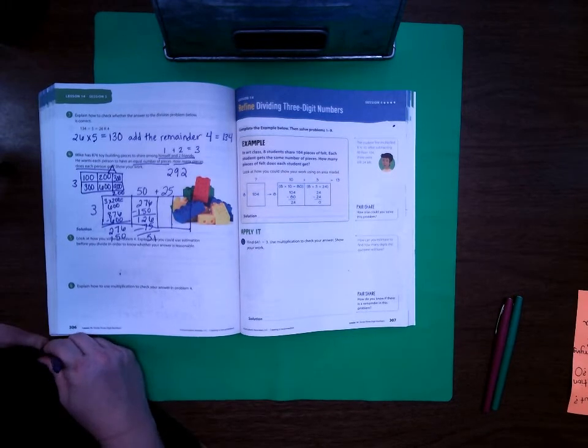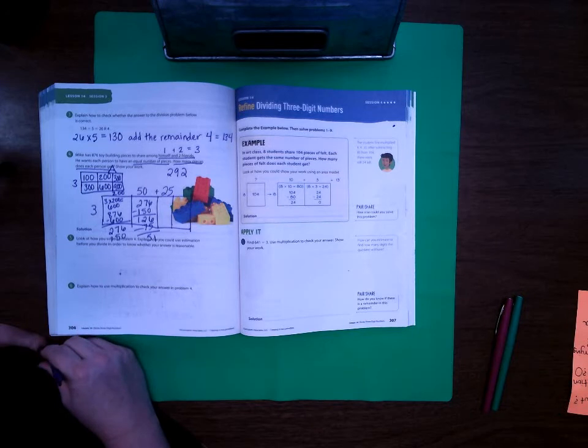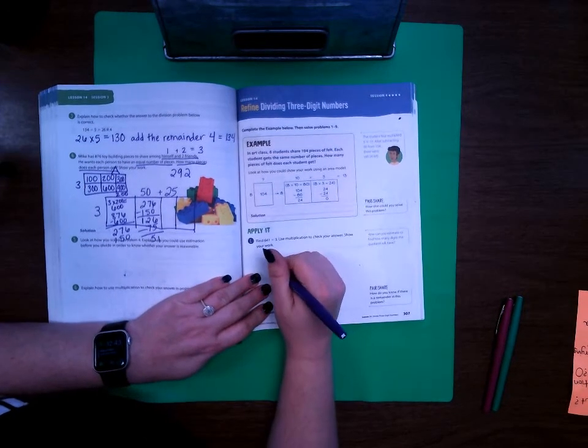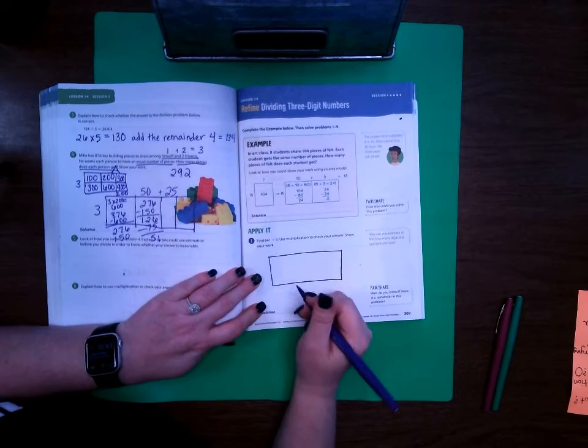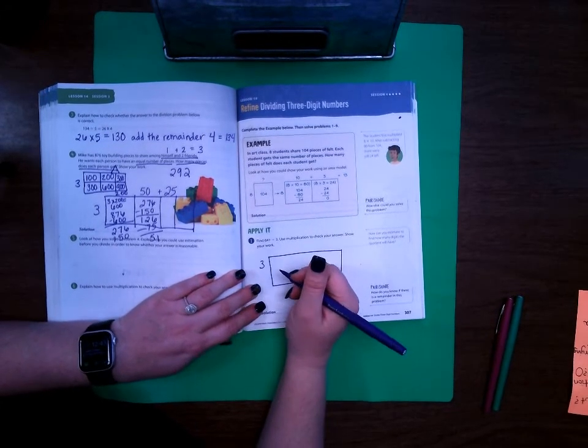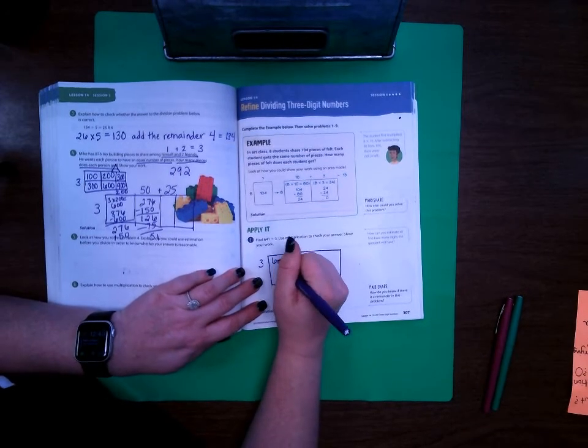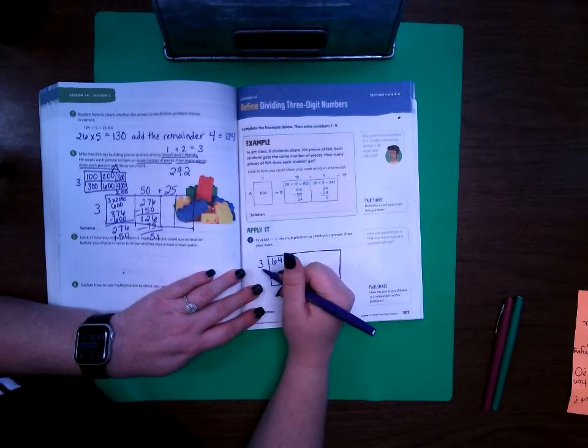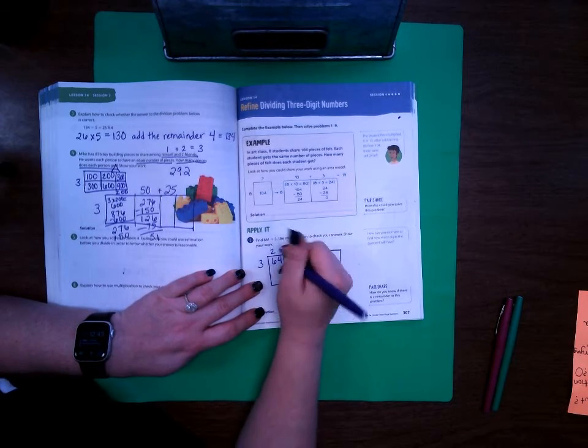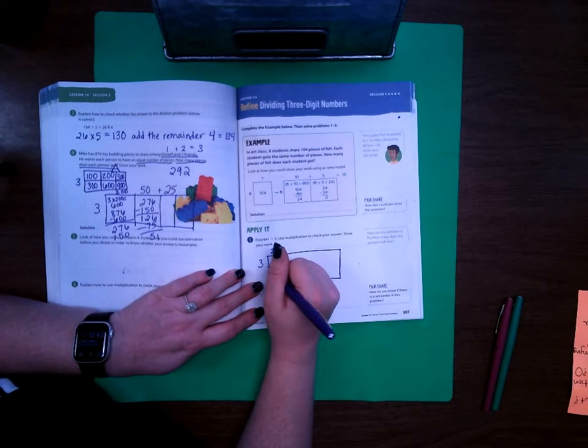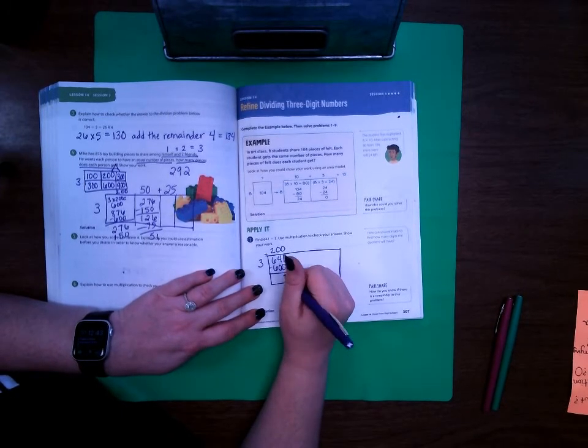All right, on page 307 we are starting with a division problem. It says find 641 divided by 3, use multiplication to check your answer, show your work. So right here I'm going to go ahead and start with making a rectangle and then I'm going to put 3 over here on the side and I'm gonna start with my number here, my number is 641. So what can I do to get close to that? Well I know 3 times 2 is 6, so if I do 3 times 200 then I can get 600. So then I'm going to multiply and subtract 600.